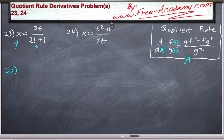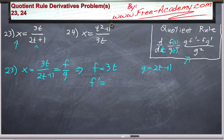So let's start by doing problem 23, where we have x equals 3t divided by 2t plus 1. This is equal to f divided by g, which implies that f equals 3t and g equals 2t plus 1. We still need f prime and g prime. f prime is equal to 3, g prime is equal to 2.